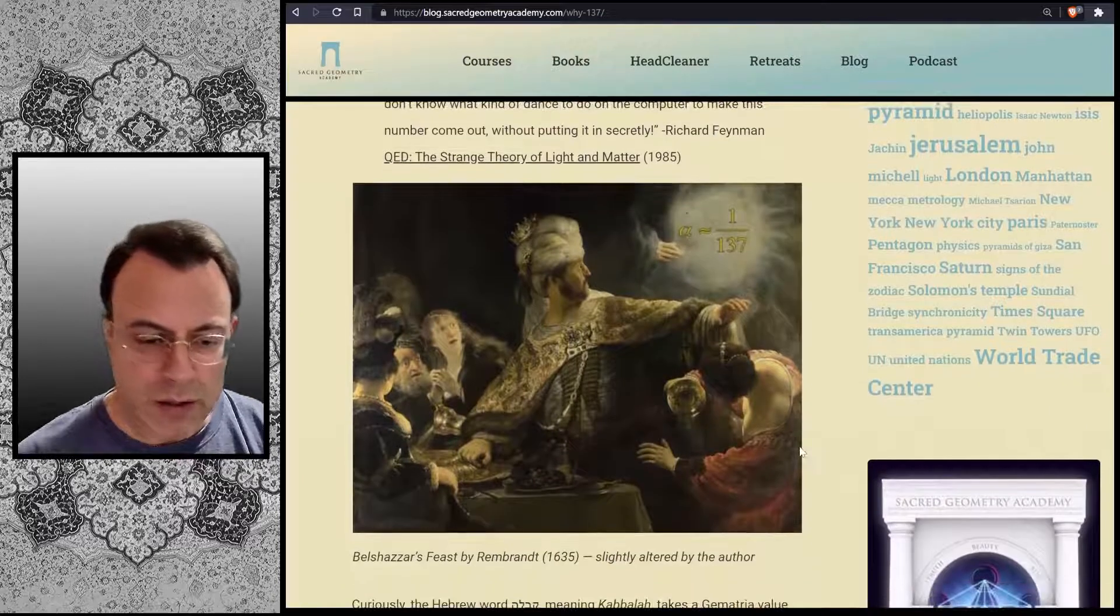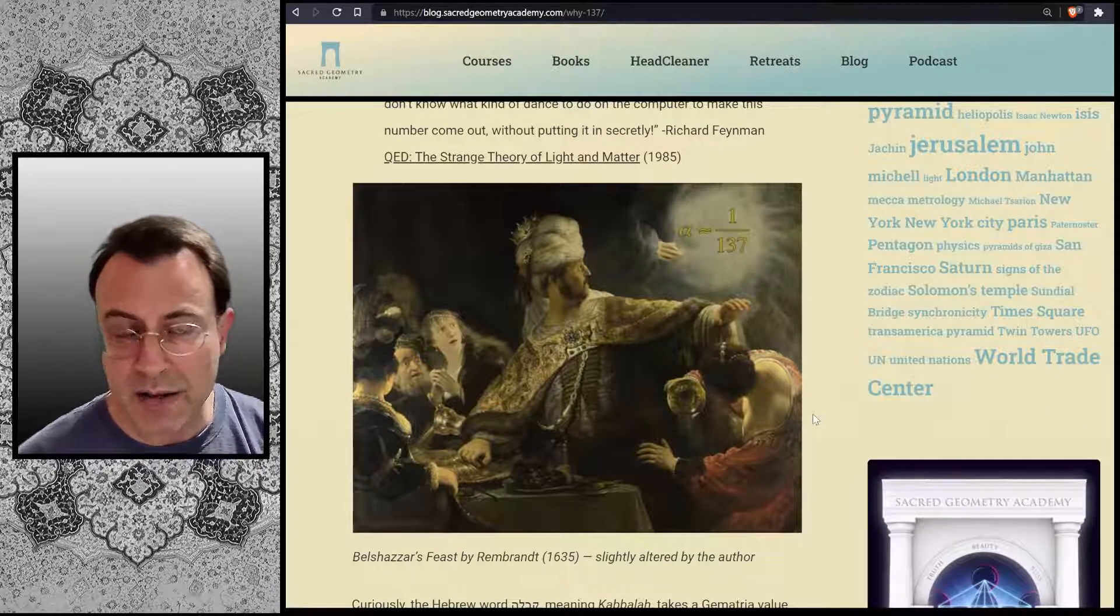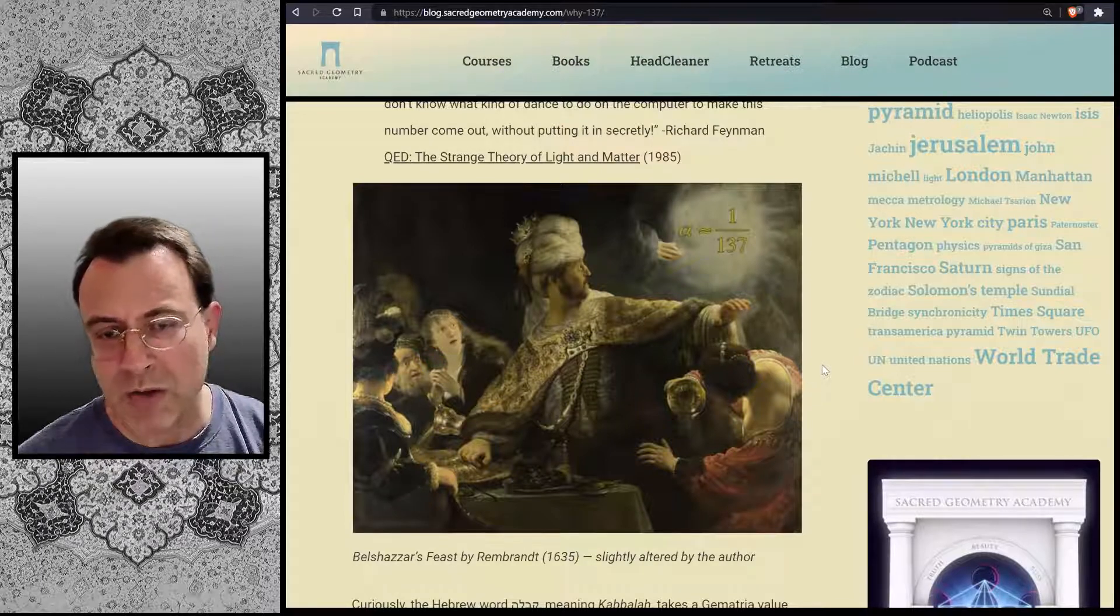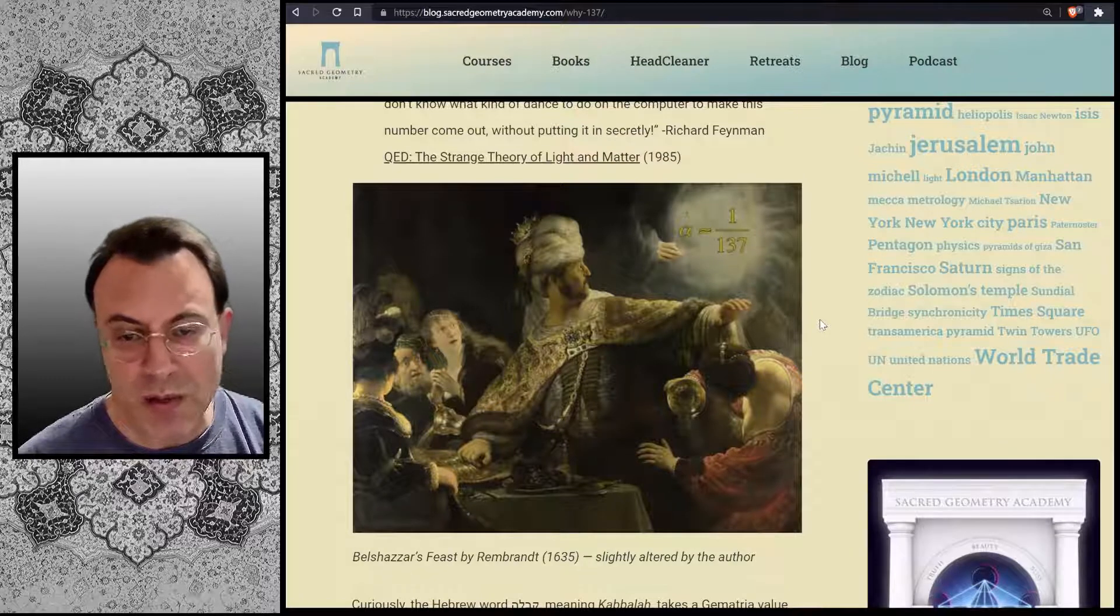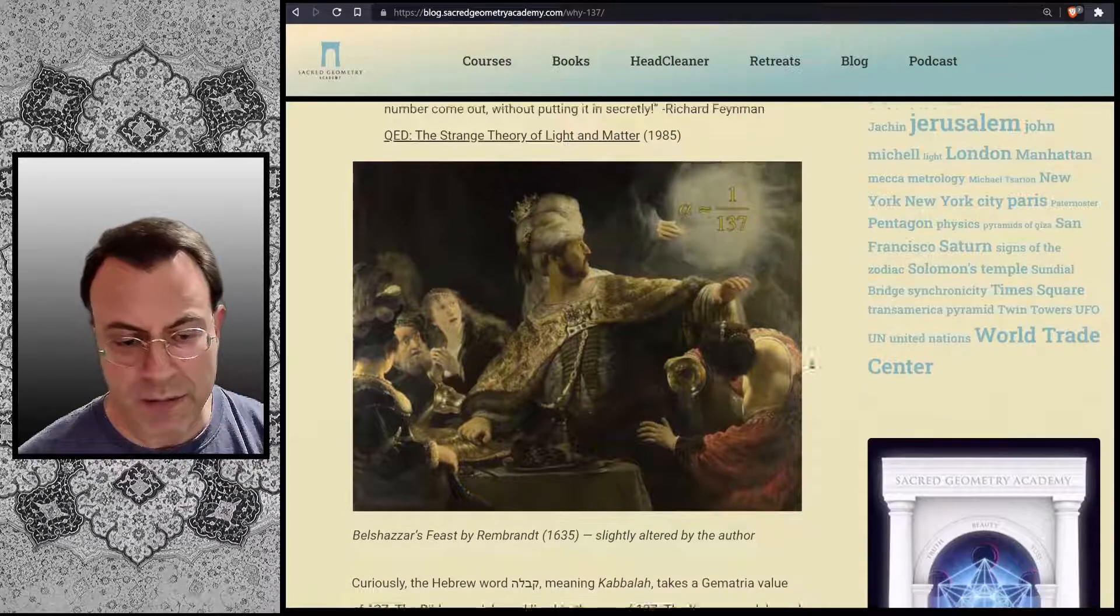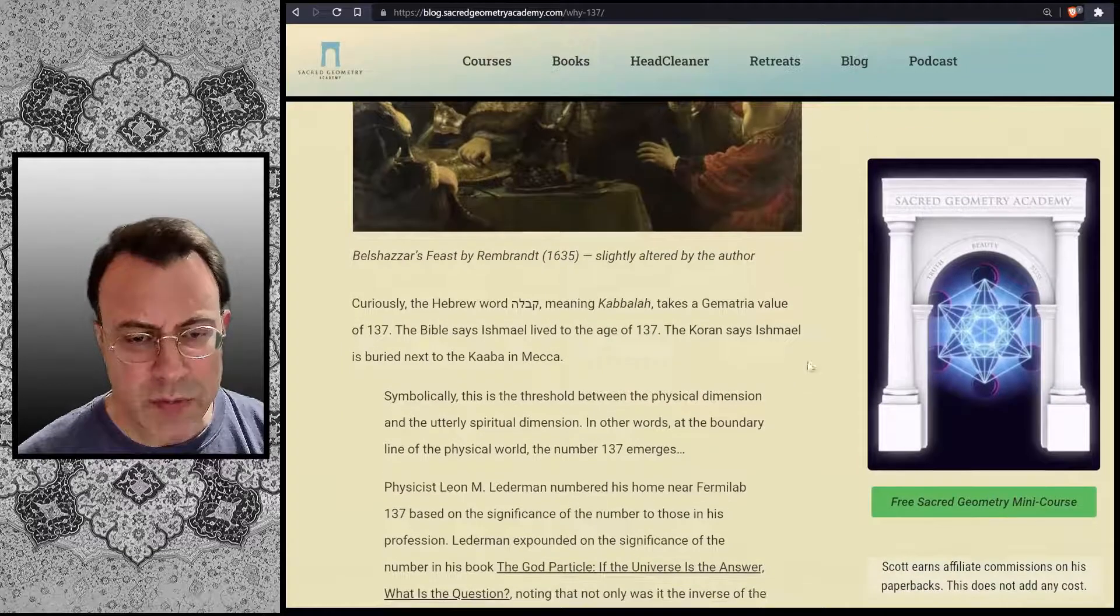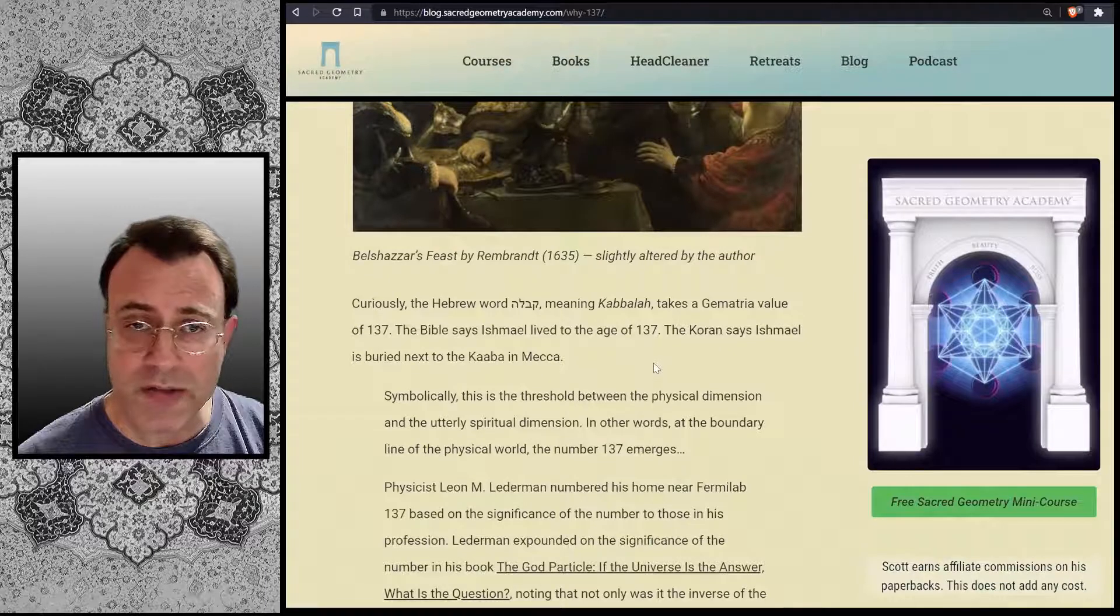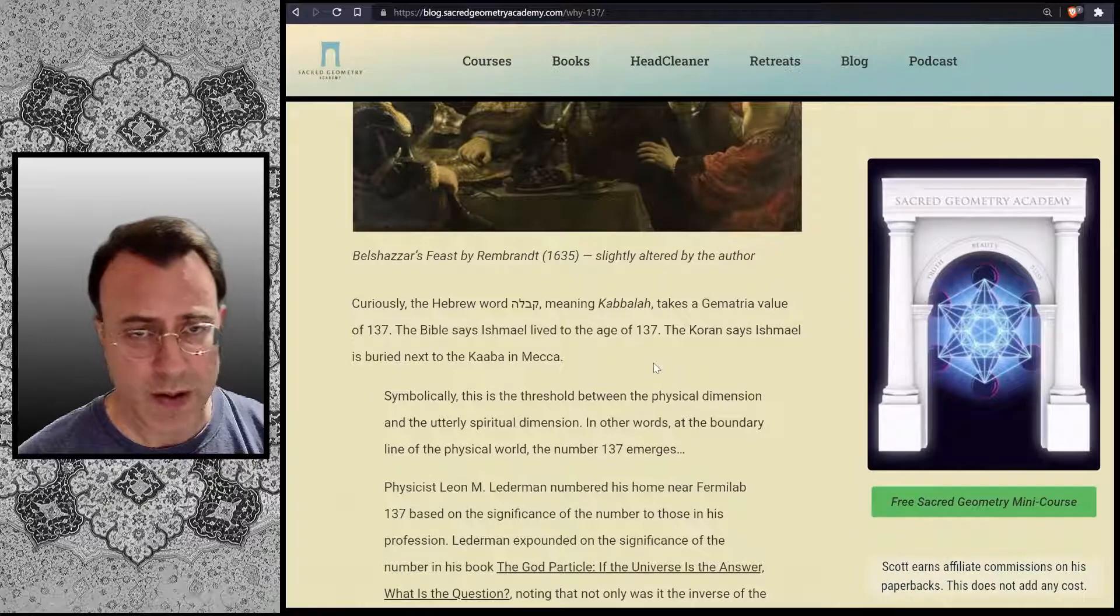Here's a graphic of Belshazzar's Feast by Rembrandt, painted in 1635, where you see the handwriting on the wall, and I've altered that to show the fine structure constant. Alpha is approximately 1 over 137. Curiously, the Hebrew word meaning Kabbalah takes a gematria value of 137.